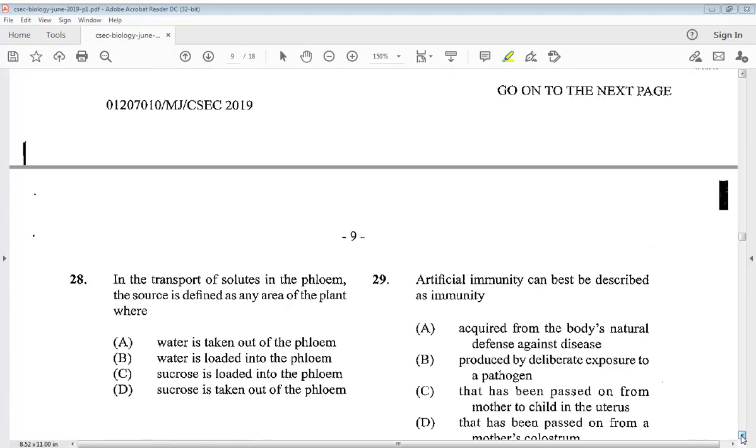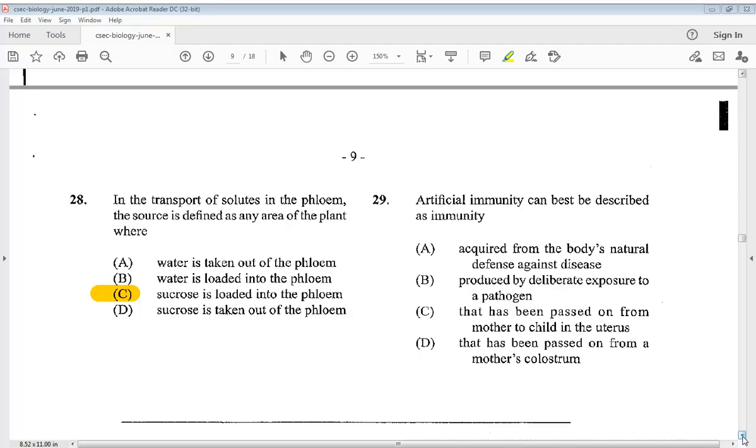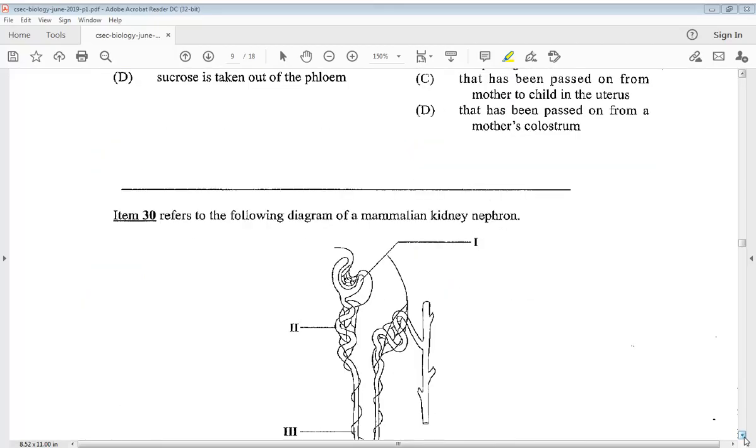Question twenty-eight: in the transport of solutes in the phloem, the source is defined as any area of the plant where? The answer is C. Question twenty-nine: artificial immunity can best be described as immunity. Is it A, acquired from the body's natural defense? B, produced by deliberate exposure to a pathogen? C, passed on from mother to child in the uterus? D, passed on from a mother's colostrum? The answer is B, produced by deliberate exposure to a pathogen.